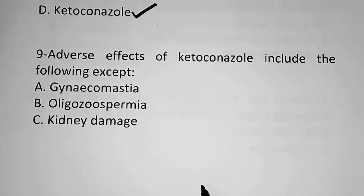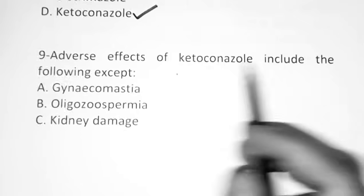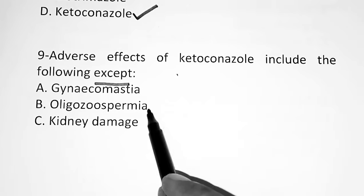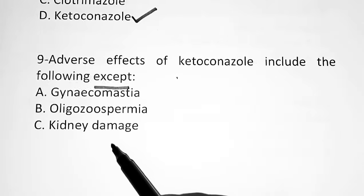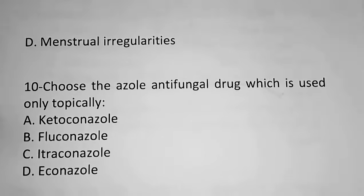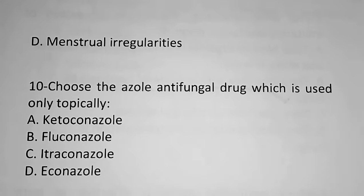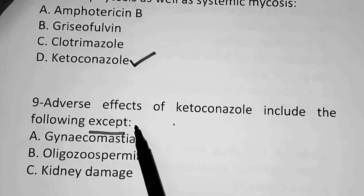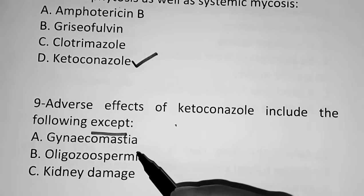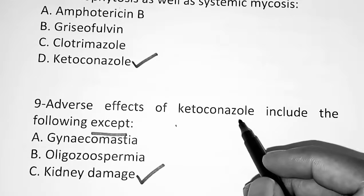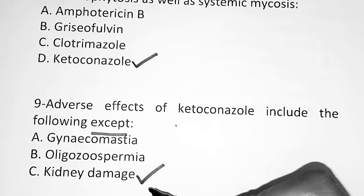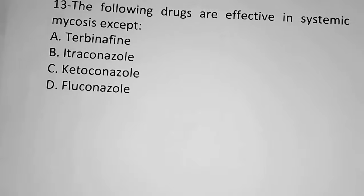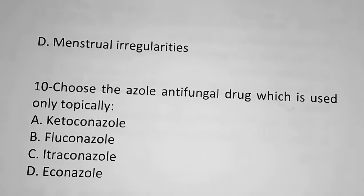The ninth question: Adverse effects of ketoconazole include the following, except — Option A, gynecomastia. Option B, oligospermia. Option C, kidney damage. Option D, menstrual irregularities. The correct answer is Option C, kidney damage. Ketoconazole does not cause kidney damage, while it does cause gynecomastia, oligospermia, and menstrual irregularities in women.